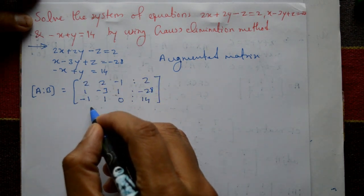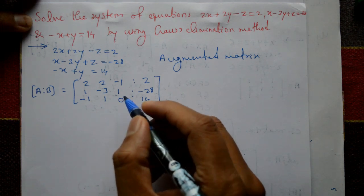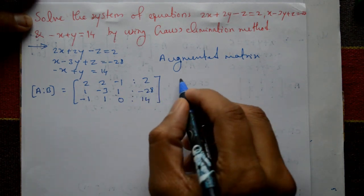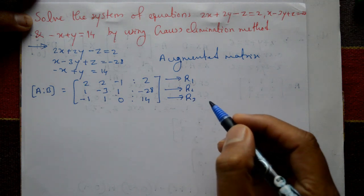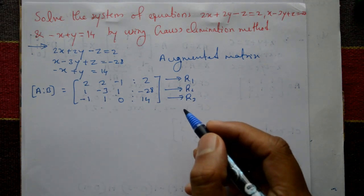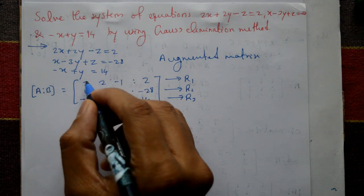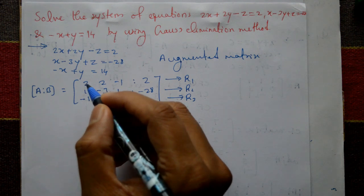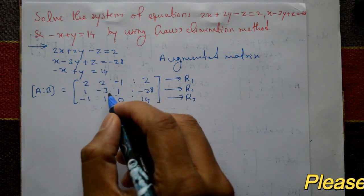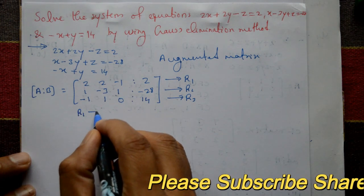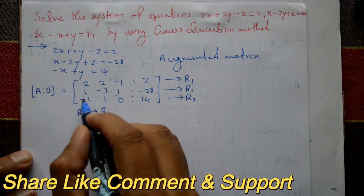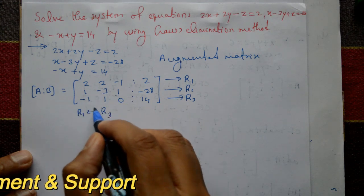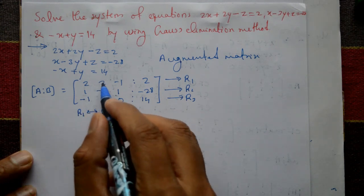This matrix is to be reduced into an upper triangular matrix, then we get x, y, z values. This is the first row R1, second row R2, third row R3. Now, the first column leading element should be 1. There are values 2, 1, and minus 1 — the suitable row is the third row, so interchange R1 and R3.